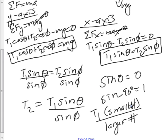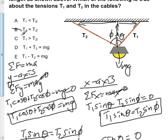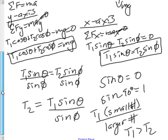So here with this relationship, we've shown that T1 is going to be greater than T2 simply off the basis of the angles. So our answer for this question would be C: T1 is greater than T2.